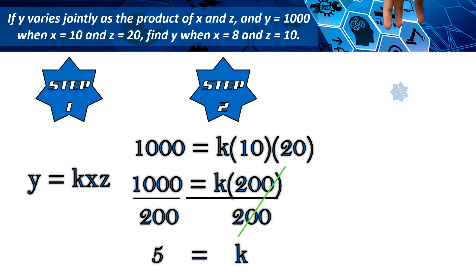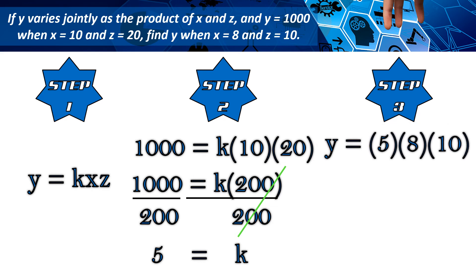And the last step is to substitute the obtained value of k and the second pair of values. y equals 5 times 8 times 10. y equals 40 times 10, or simply y equals 400.